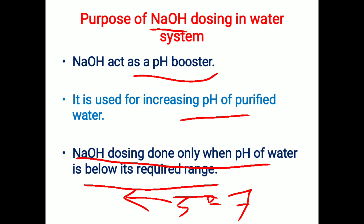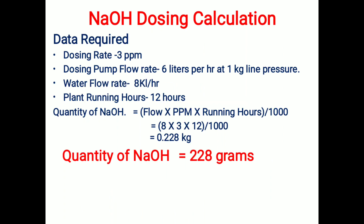Now we'll see how to do the dosing calculation. The data required for dosing calculation: first, the dosing rate — here I have taken 3 ppm. Second, we need the specification of the dosing pump through which we are going to make the dosing — here the dosing pump is 6 liters per hour at 1 kg line pressure.